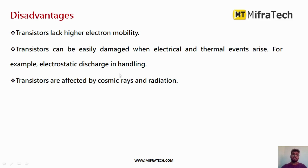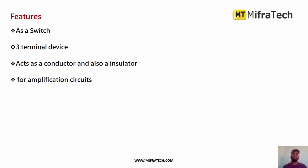The disadvantages of transistors are: they have a lack of electron mobility — electron mobility is very low in some transistors. A transistor can be severely damaged whenever a high electrical or thermal event occurs, such as high heat or high voltage. For example, electrostatic discharge handling can also damage them. Transistors are also affected by cosmic rays and radiation.